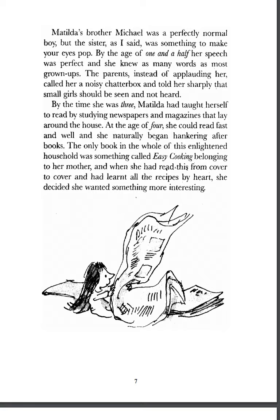Matilda's brother Michael was a perfectly normal boy, but the sister was something to make your eyes pop. By the age of one and a half, her speech was perfect and she knew as many words as most grown-ups. The parents, instead of applauding her, called her a noisy chatterbox and told her sharply that small girls should be seen and not heard. By the time she was three, Matilda had taught herself to read by studying newspapers and magazines that lay around the house. At the age of four, she could read fast and well and naturally began hankering after books — meaning she wanted more books. The only book in the whole of this enlightened household was something called Easy Cooking, belonging to her mother, and when she had read this from cover to cover and had learned all the recipes by heart, she decided she wanted something more interesting.